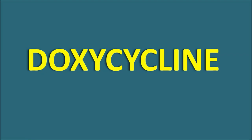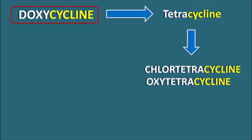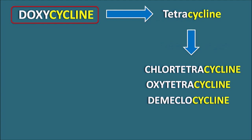Hi everyone, today in this video we are going to discuss doxycycline — how this drug acts, what are the side effects, important precautions, and the clinical indications. The suffix 'cycline' indicates this drug belongs to the category of tetracyclines. Tetracyclines are a group of compounds having four rings, and in this category we have drugs like tetracycline, chlorotetracycline, oxytetracycline, demeclocycline, and minocycline.